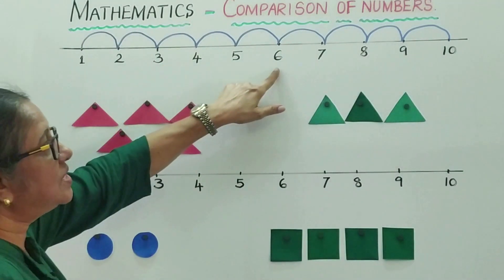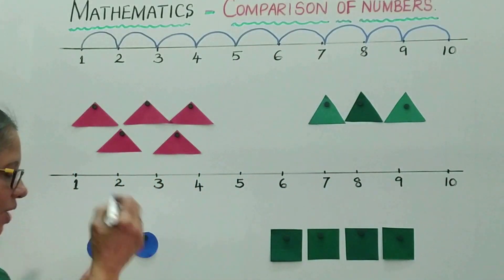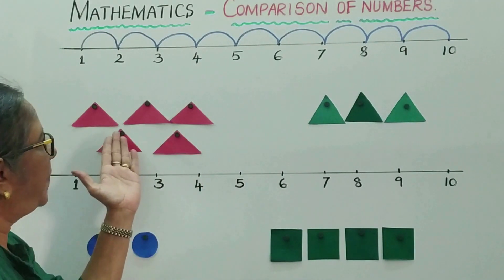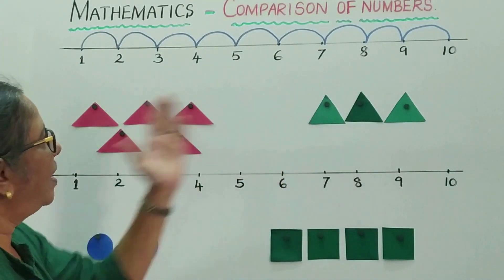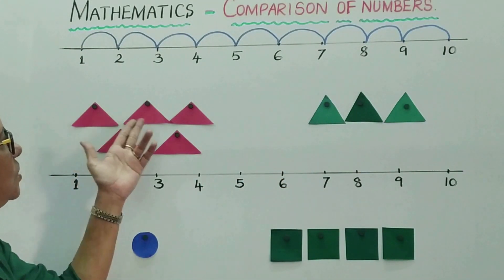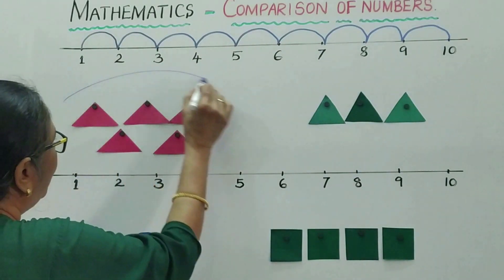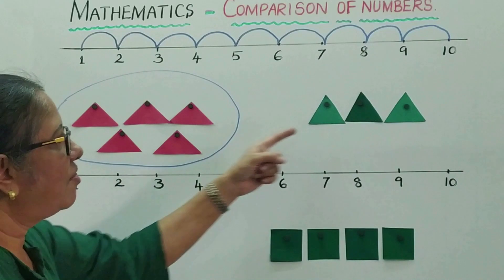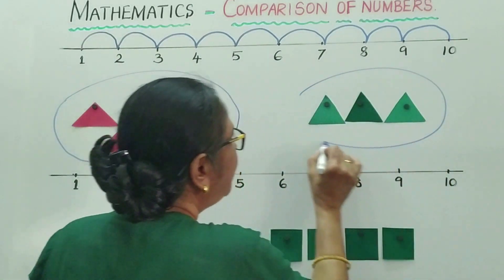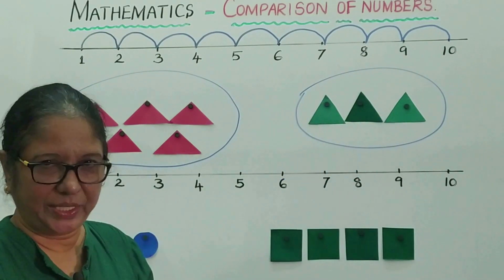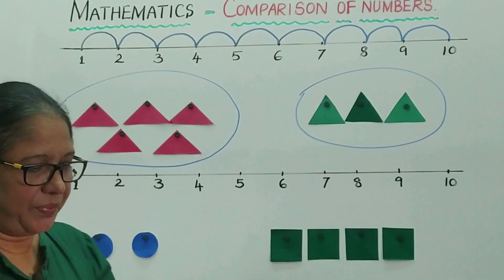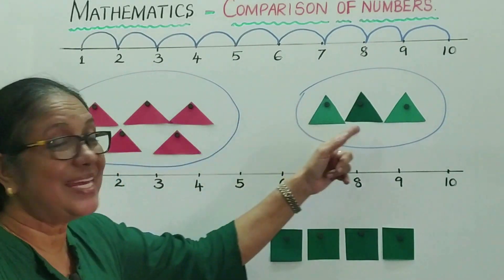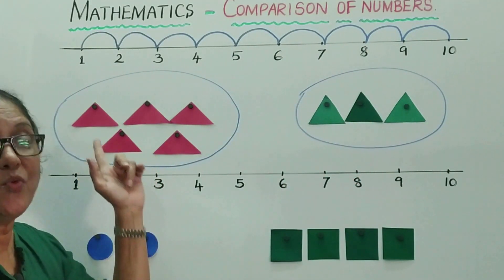Now let me show you with objects. I have a few triangles here — pink and green. In this oval I have 1, 2, 3, 4, 5 triangles. In this other oval, how many triangles do I have? 1, 2, and 3.